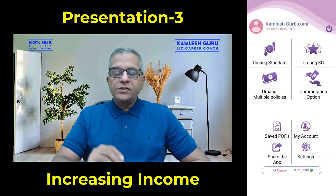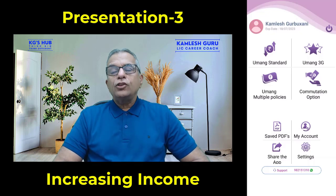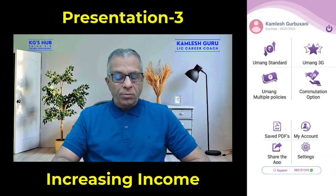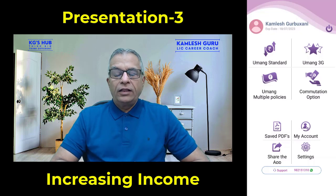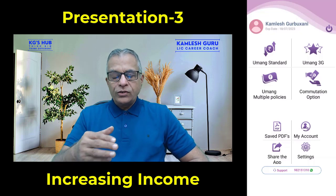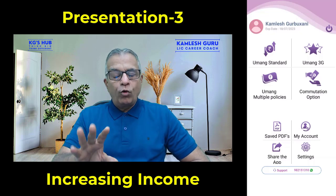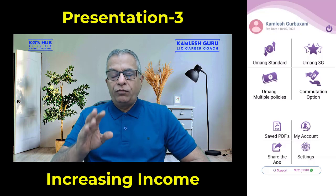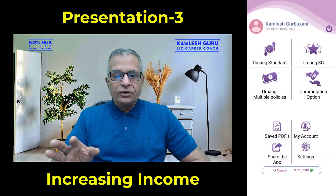Now the third presentation: people say they want increasing income every five years. Instead of giving them one policy, you have to give them four policies of different terms — 15, 20, 25, and 30 years.